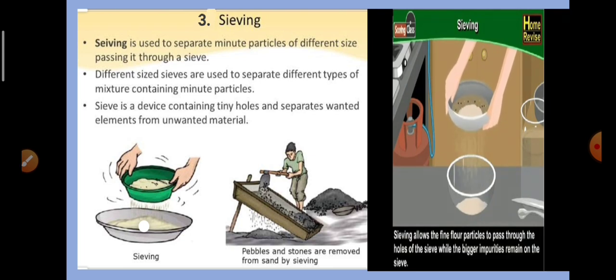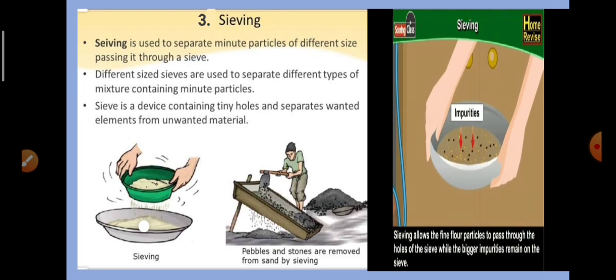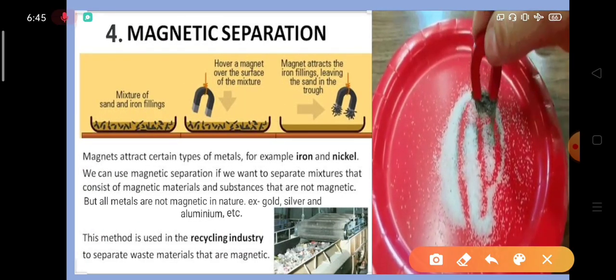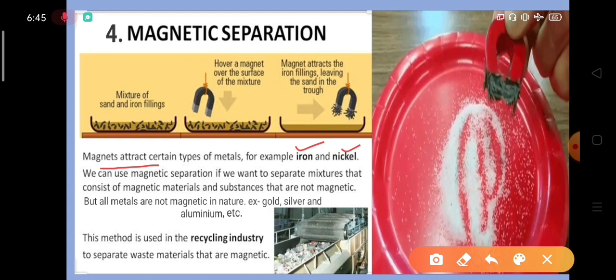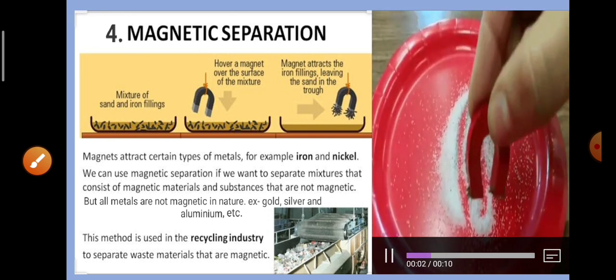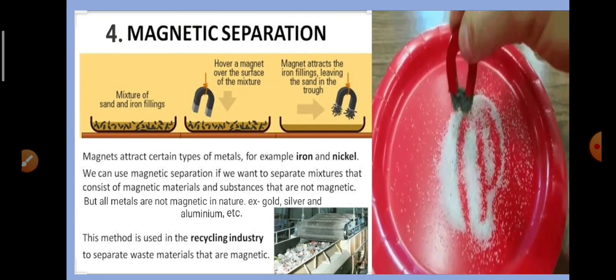In sieving, the wanted particles pass through the sieve while the unwanted impurities are left behind. The next method is magnetic separation. Magnets attract certain types of metals, for example iron and nickel. We can use magnetic separation to separate magnetic materials from non-magnetic ones. Remember that not all metals are magnetic — gold, silver, and aluminum are non-magnetic. This method is used in the recycling industry to separate magnetic waste materials. You can see iron particles being separated from salt using a magnet.